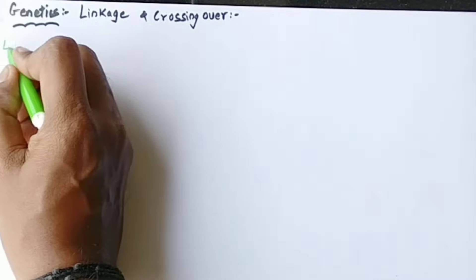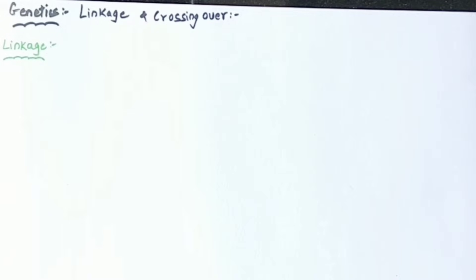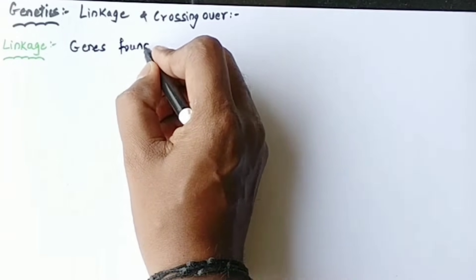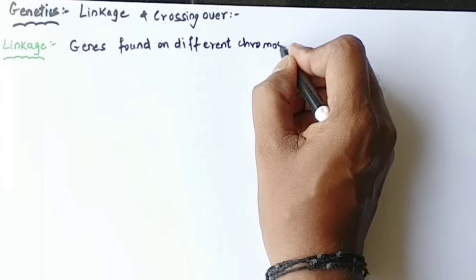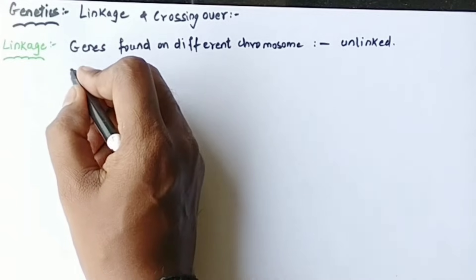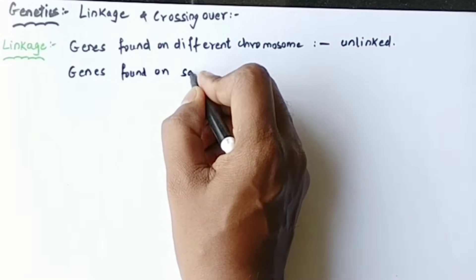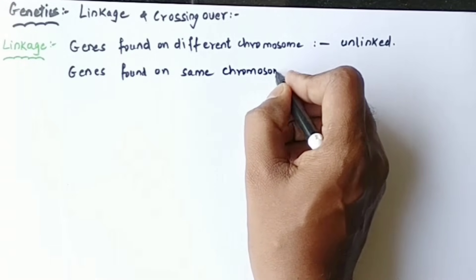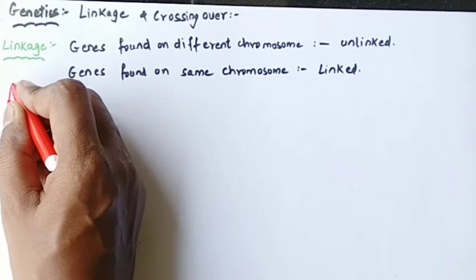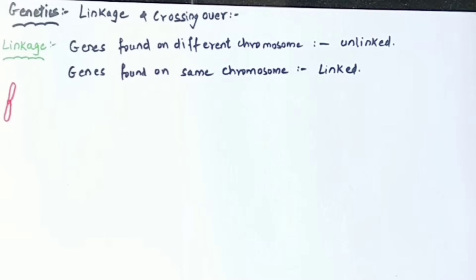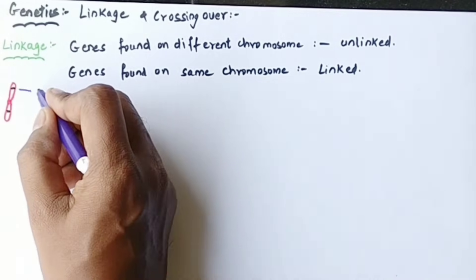Heredity is purely taking place because of linkage, and crossing over is responsible for variation. As the name suggests, linkage means something is linked and it will be transferred as it is to the next generation. Genes found on different chromosomes are not linked because their distance is very far. But genes found on the same chromosome with very less distance between them are called linked genes. When the distance is very less, the chance for crossing over is also very less.